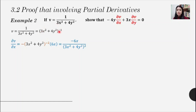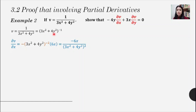To find del v/del x, we apply the chain rule. With the bracket to the power of minus one, we pull the minus one to the front and reduce the power by one, giving minus two. We copy back whatever is inside the bracket, then differentiate the inside. Differentiating gives 6x, while the remaining term is a constant giving zero. This is our simplified del v/del x.